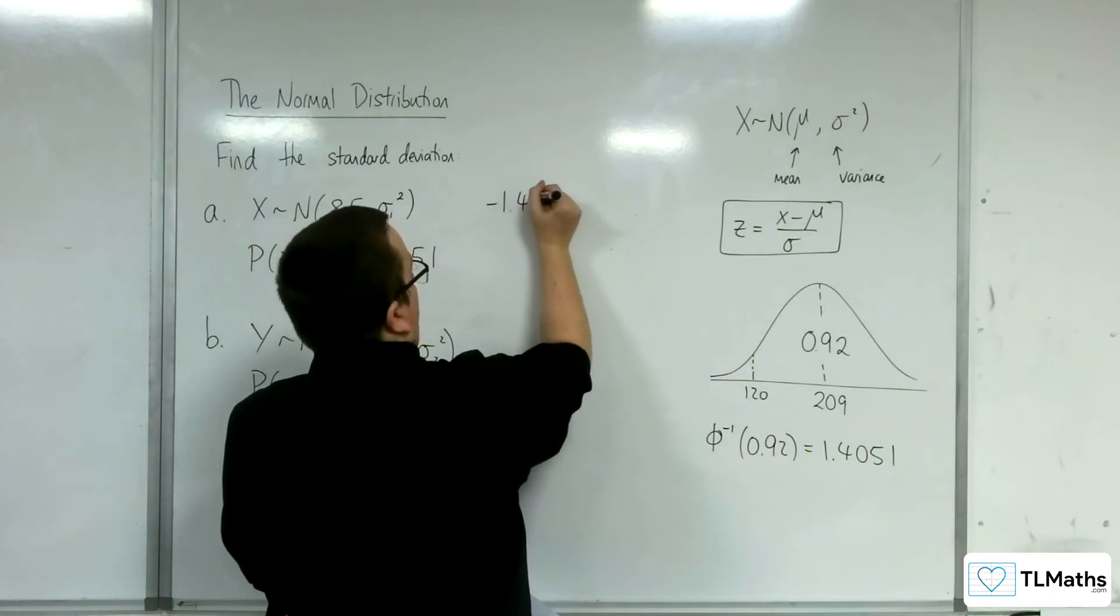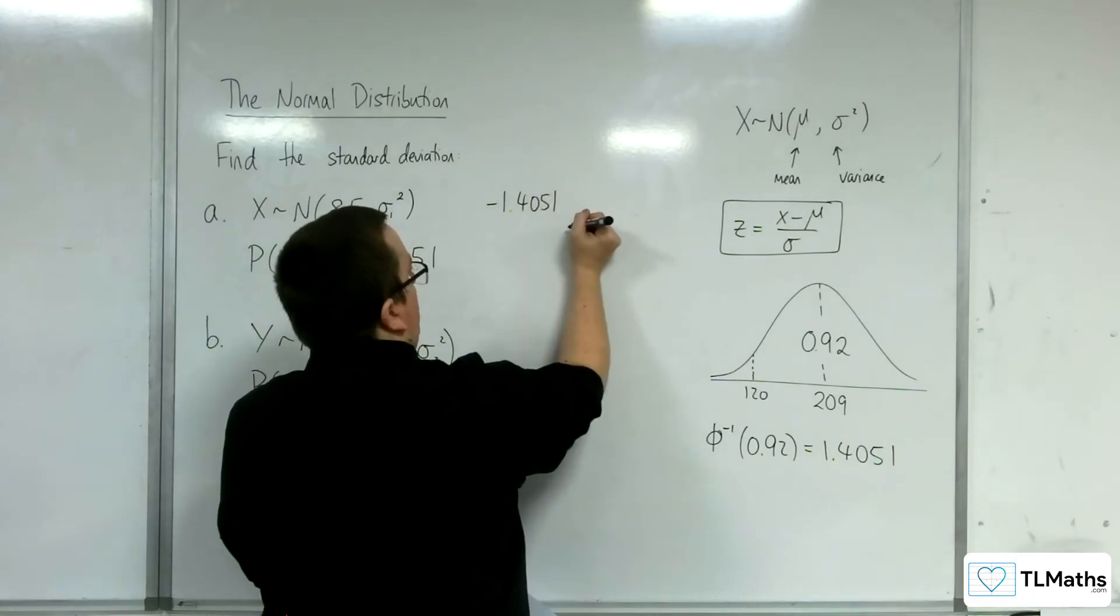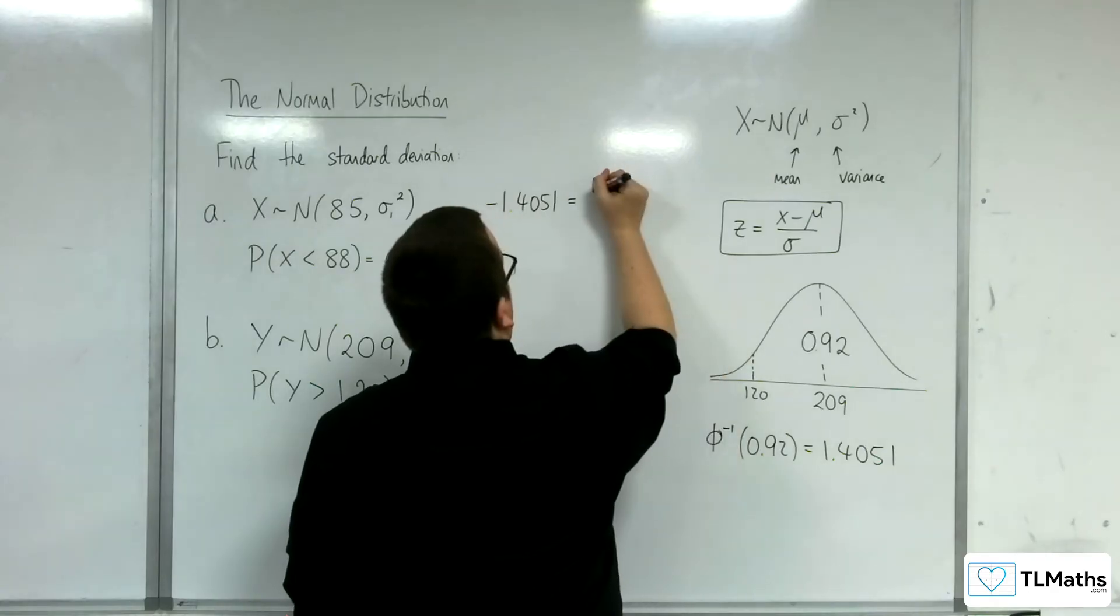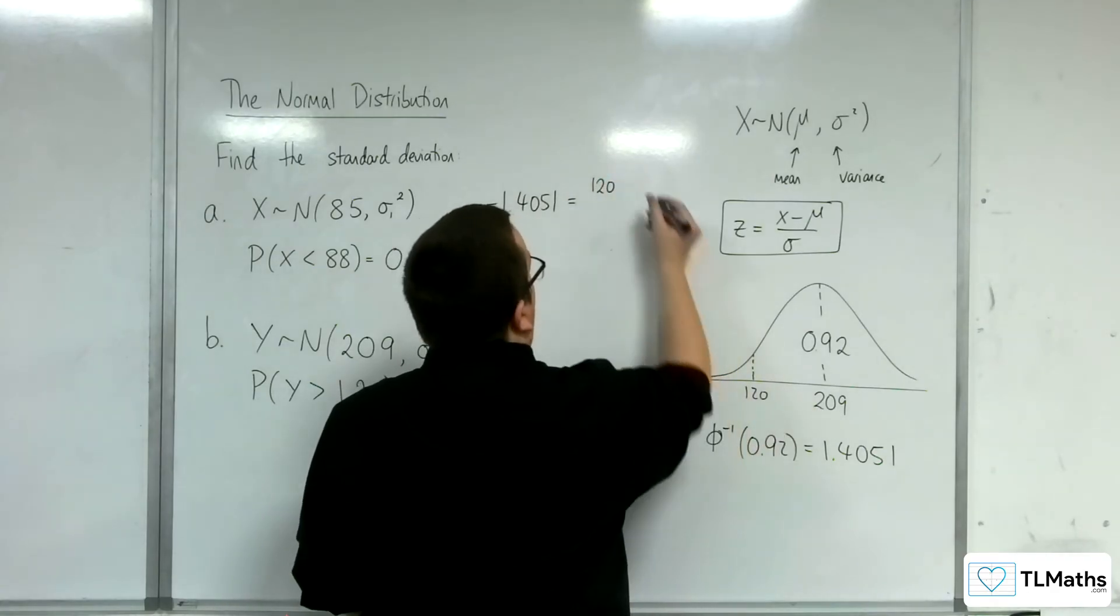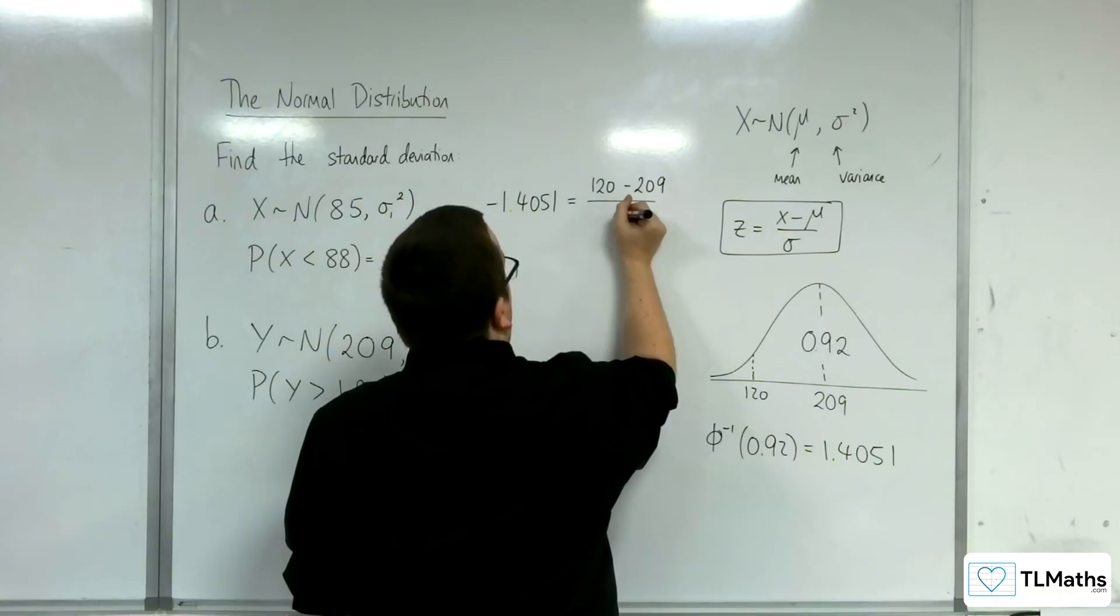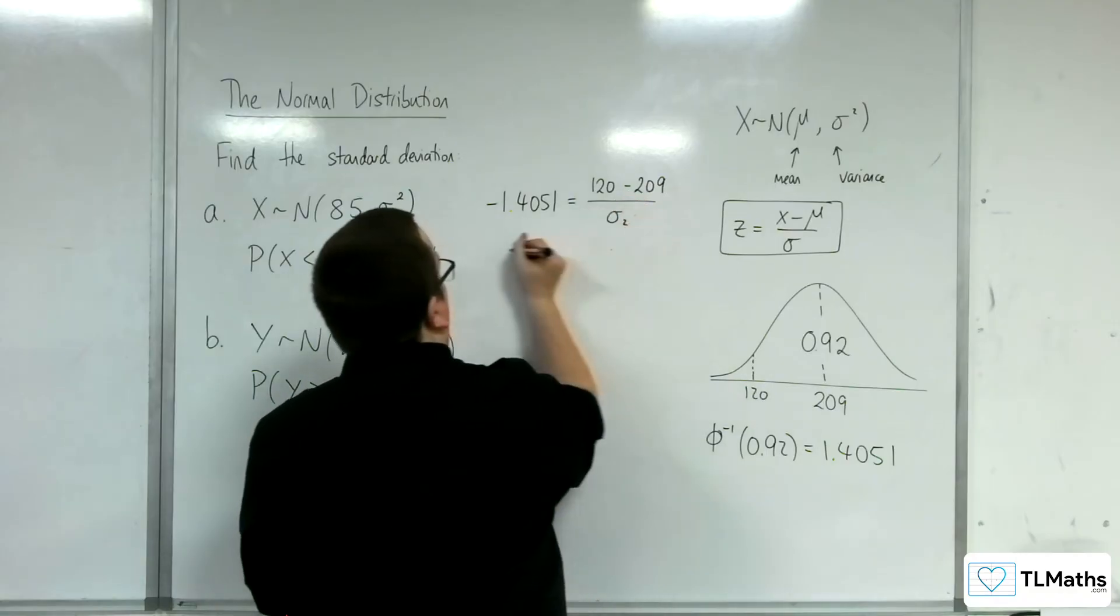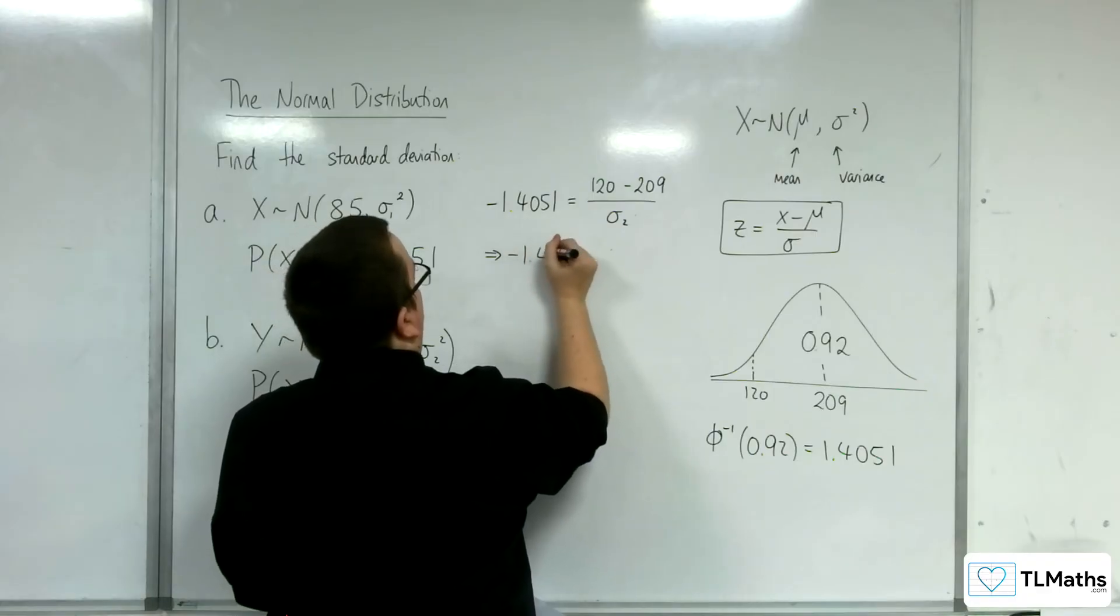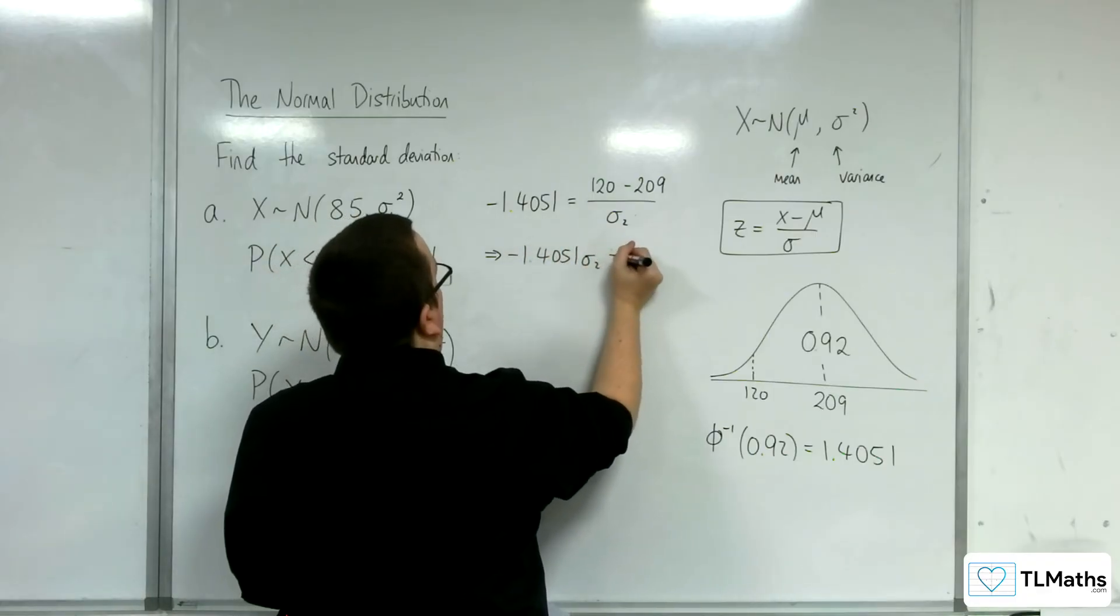So minus 1.4051 is the z value. The x value is 120. The mean is 209, and that's divided by the standard deviation, sigma 2. Multiplying up by sigma 2, minus 1.4051 times sigma 2.